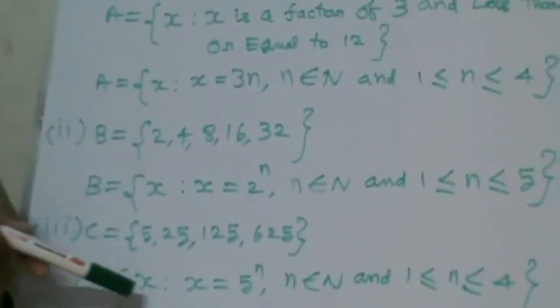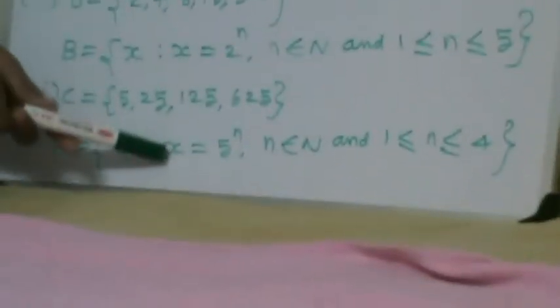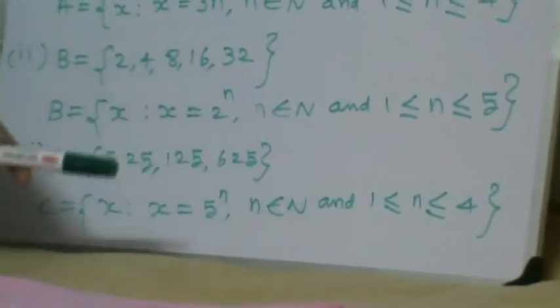So you can represent in the set builder form. C is equal to set of all x such that x is equal to 5 power n where n belongs to N and 1 less than or equal to n less than or equal to 4.